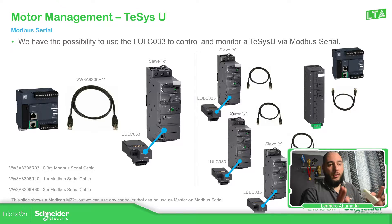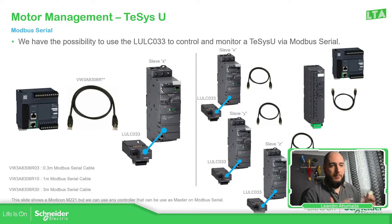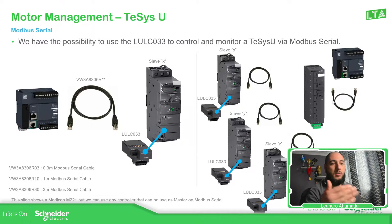So if you're using, for example, our PLC that has the RJ45 connector, we have the solution using a cable — you can use this kind of cable in order to connect. If you want to have multiple TESIS-U, you may use this LU9 Modbus Hub that allows you to connect different TESIS units or Modbus slaves in the network.